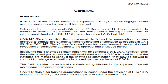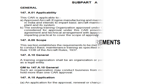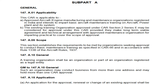The first section is Section A - Technical Requirements. Sub Part A, first is General - that is Applicability. CAR 147 is applicable to approved aircraft engine manufacturing and maintenance organizations registered in India which want to conduct aircraft, power plant, or systems maintenance training.